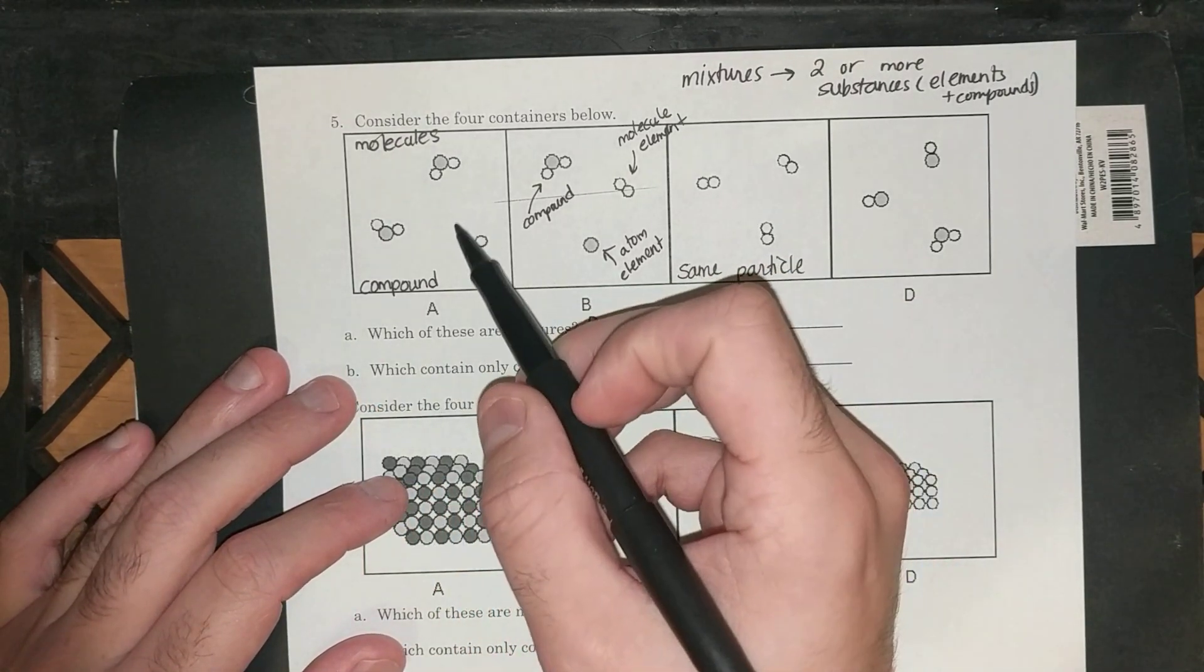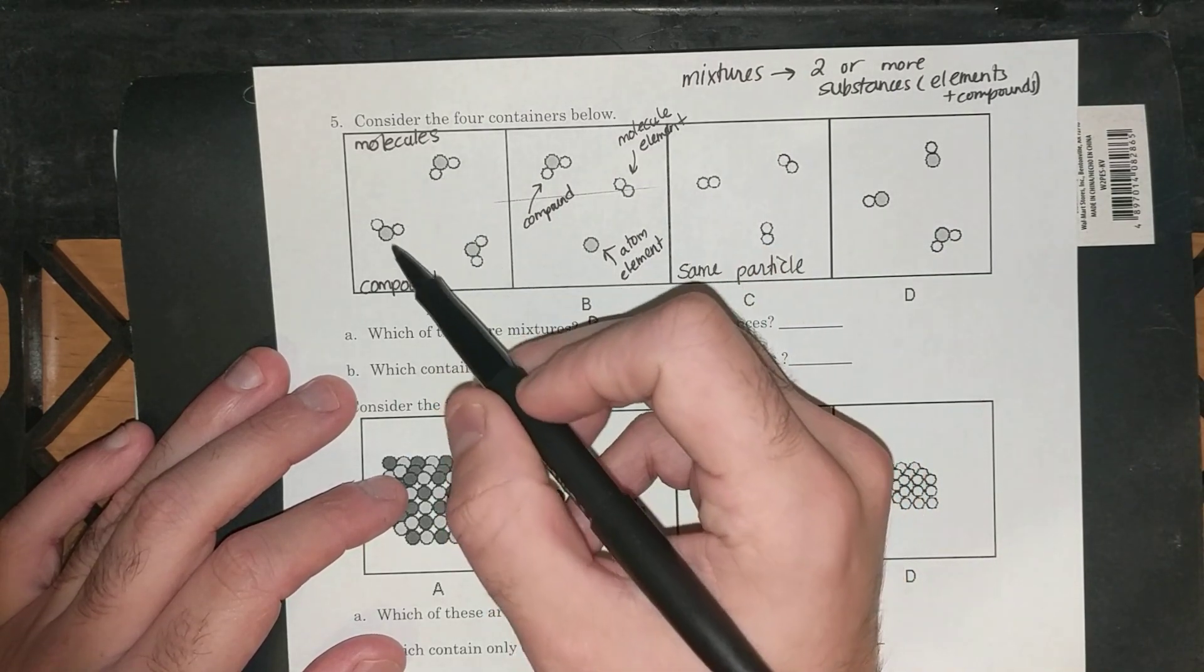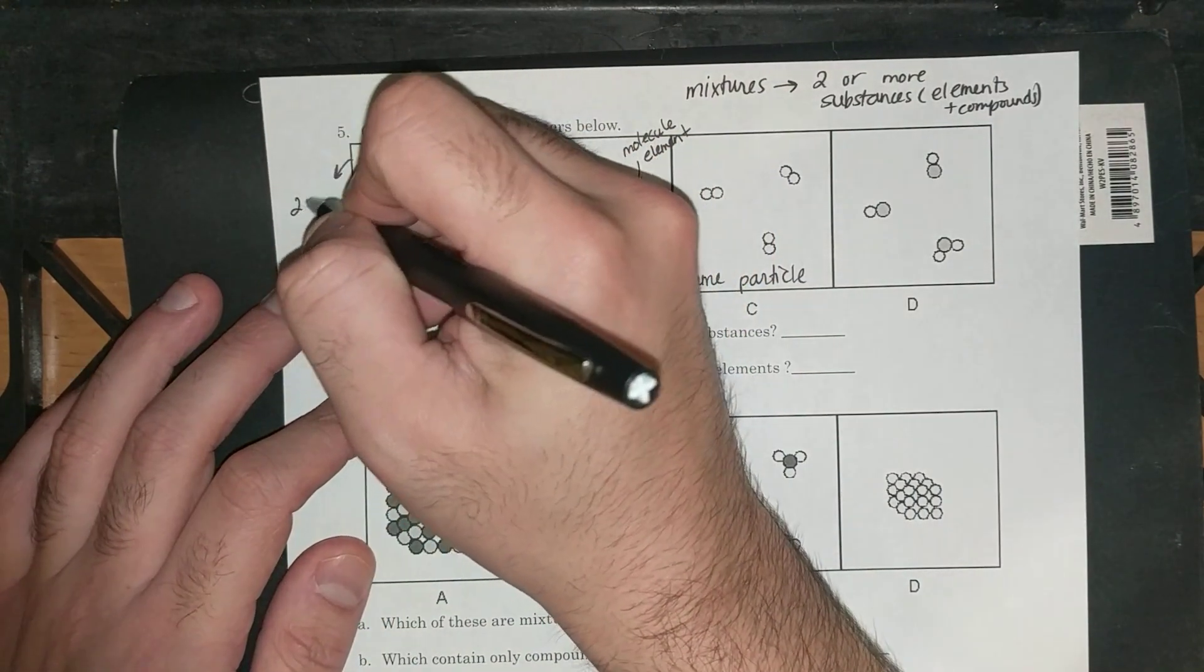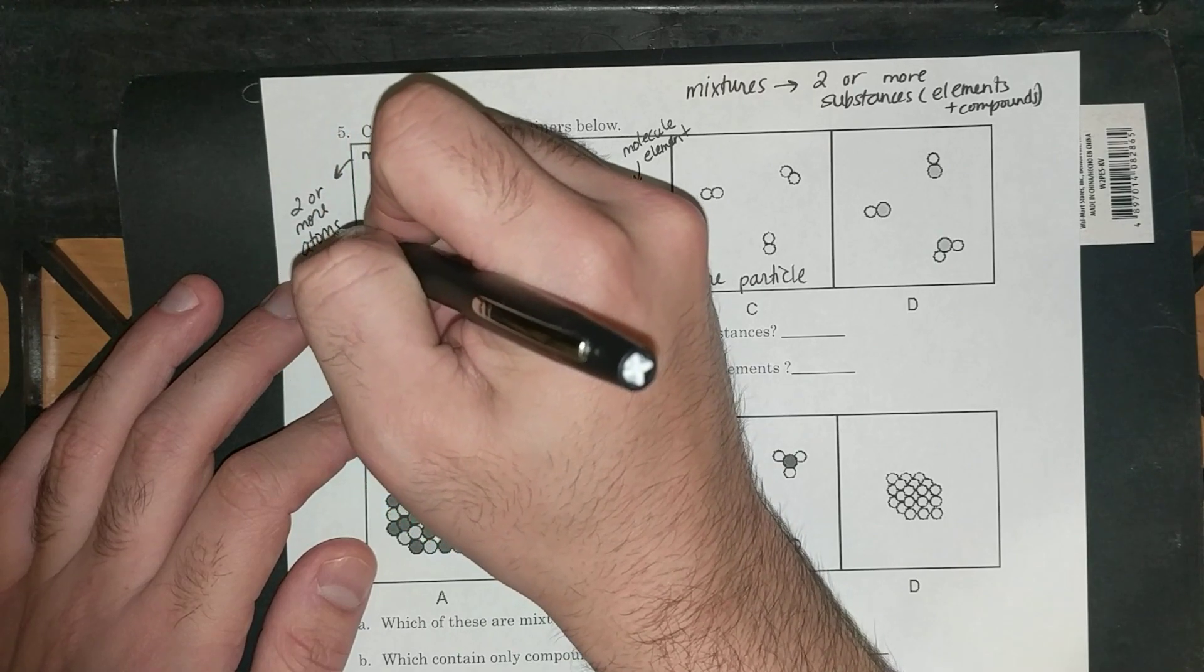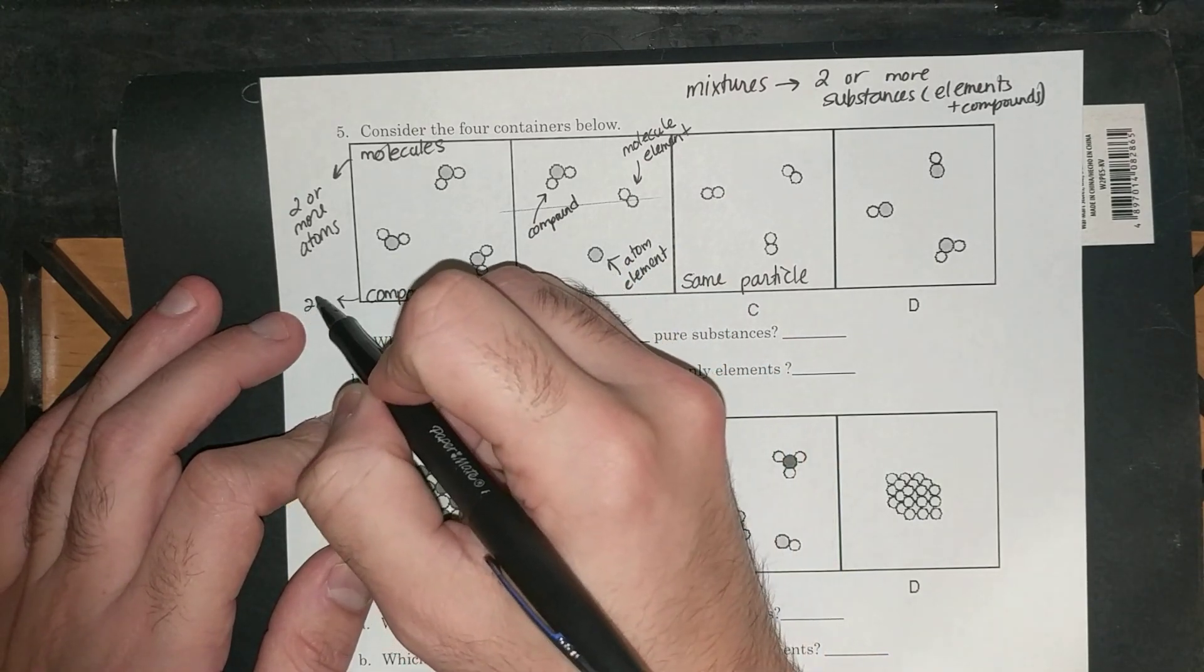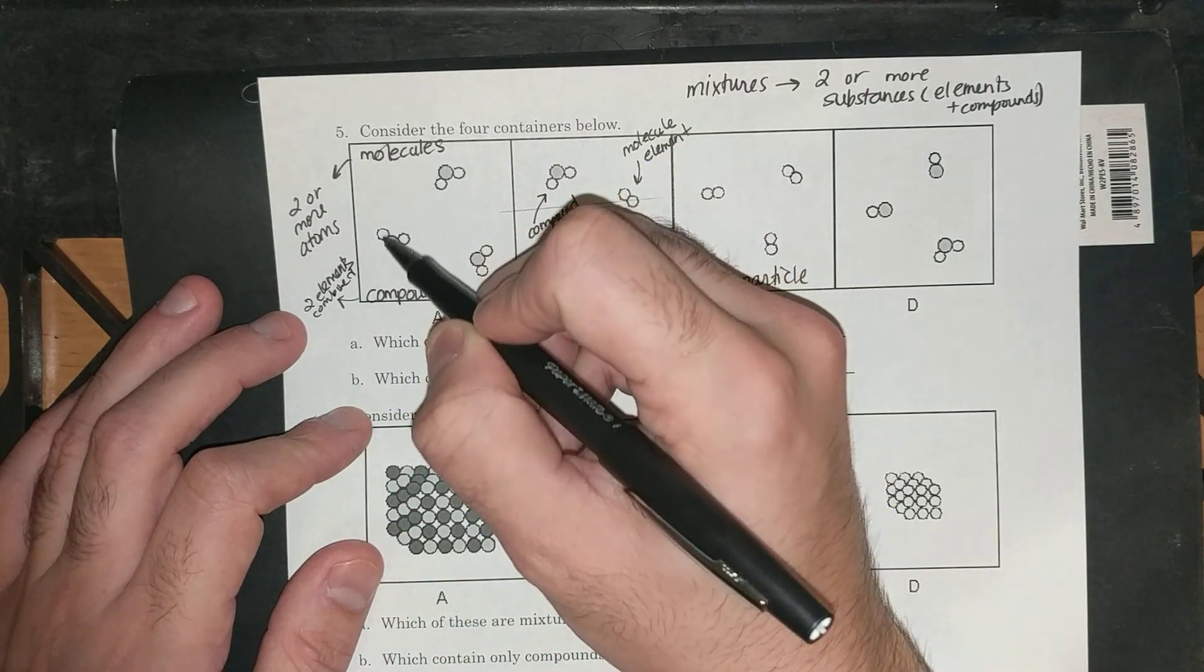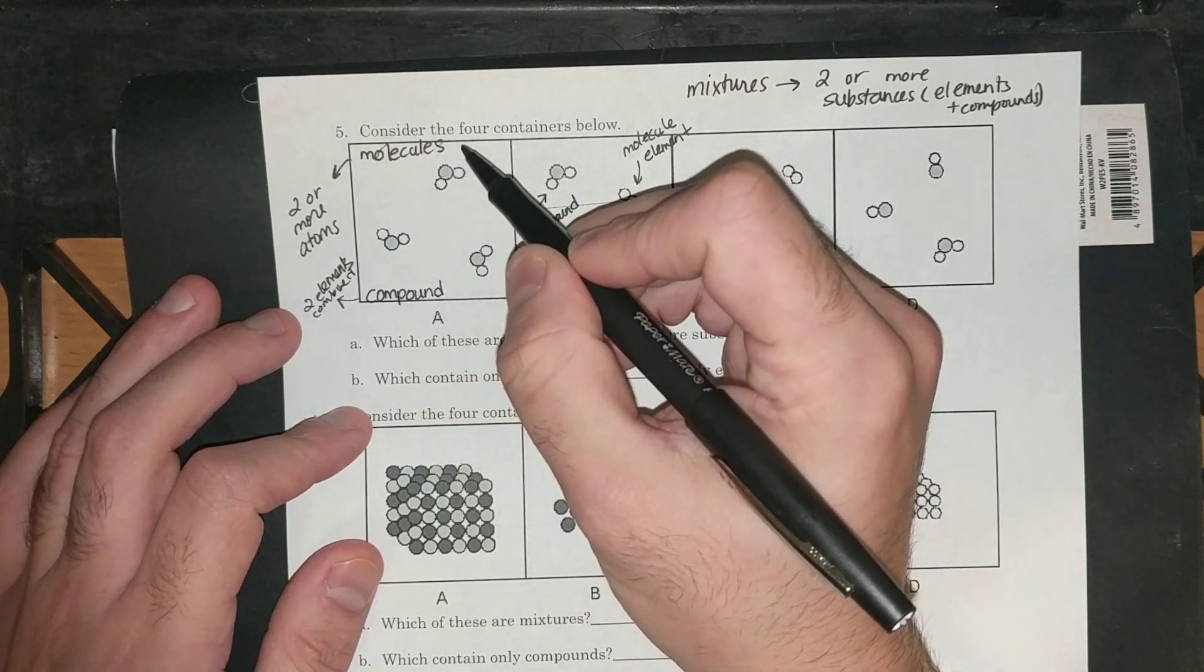So the first question says, which of these are mixtures? So going through each of them, I started to make a note that in this first container, I have all molecules. Remember, molecules are two or more atoms. If I have different colors, two elements combined, that's a compound. And all of these are the same molecule of the same compound. So this whole thing is a compound.